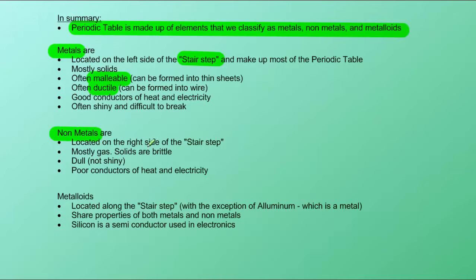Nonmetals are located on the right side of the stair step. Most of them are gases. The ones that are solid are brittle. They are dull, not shiny, the exact opposite of the metals. They are poor conductors of heat and electricity. We call that property, they are insulators.